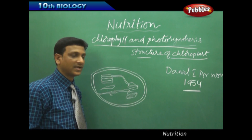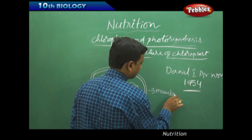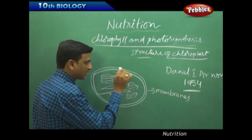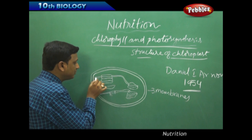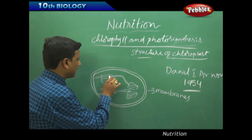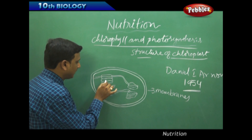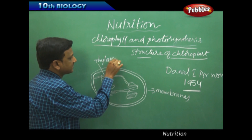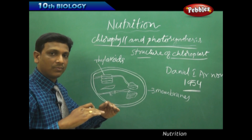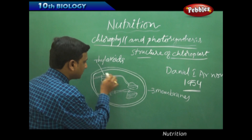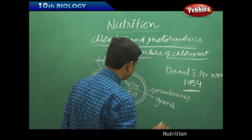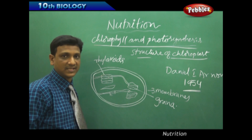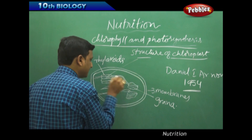The chloroplast is an organelle having three membranes. The outer covering is made up of two membranes — an outer membrane and an inner membrane. There is one more membrane inside which forms structures called grana, where we find thylakoids stacked in piles one above the other. The thylakoids are made up of membranes organized into grana, and this is the location where the pigments are located — the site for absorption of sunlight.